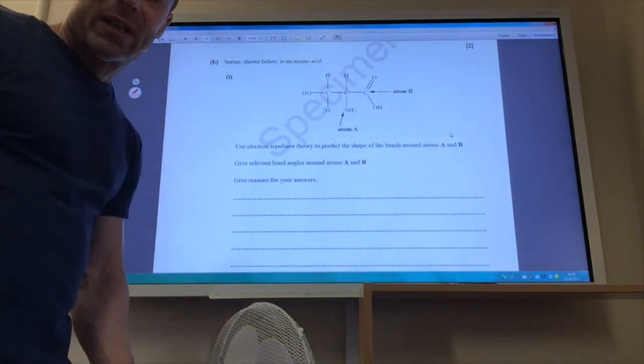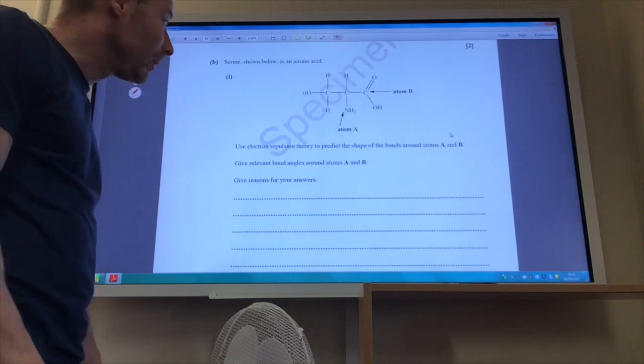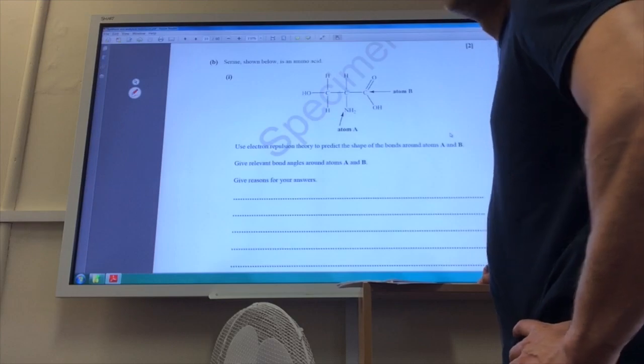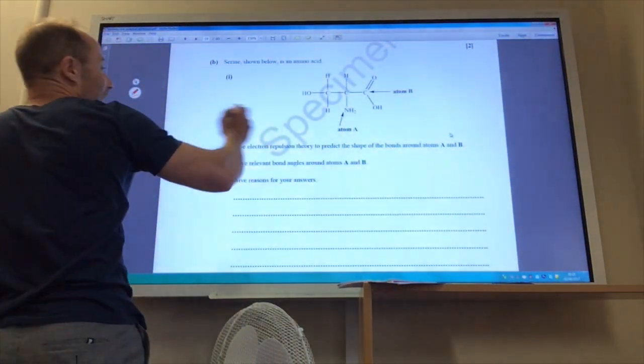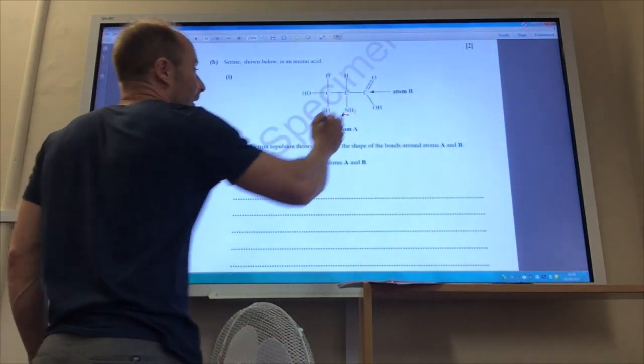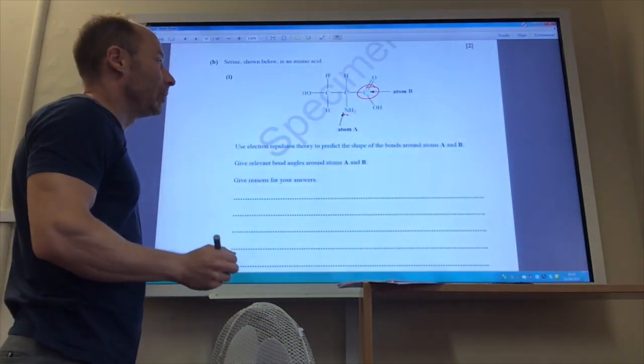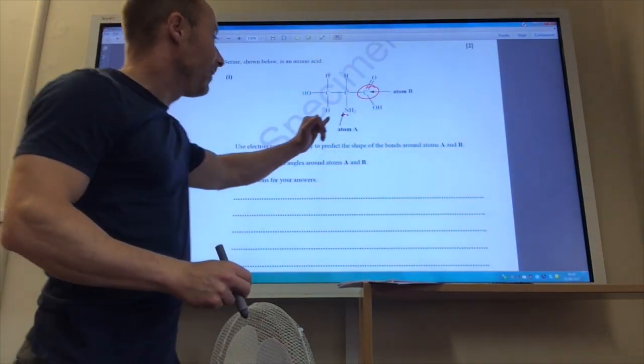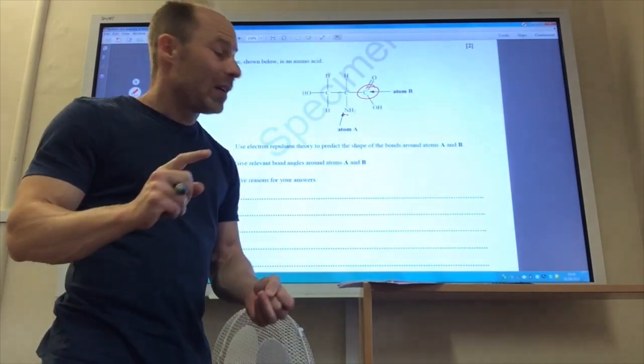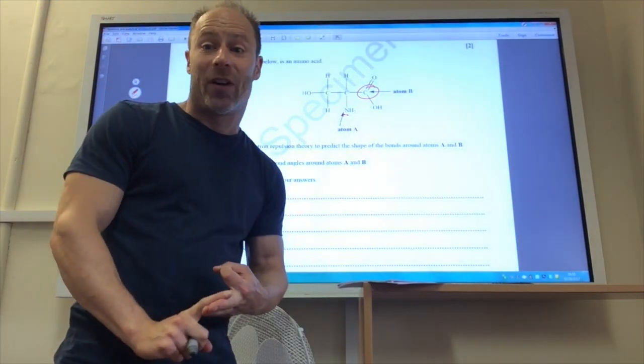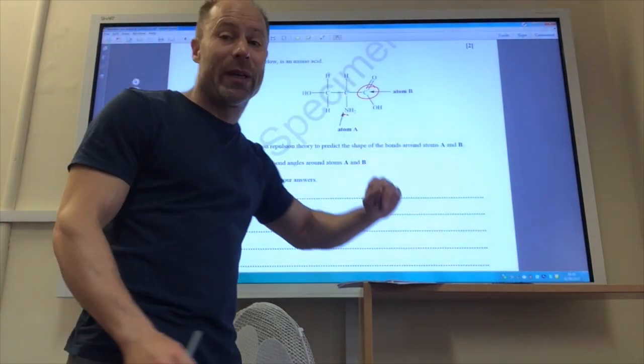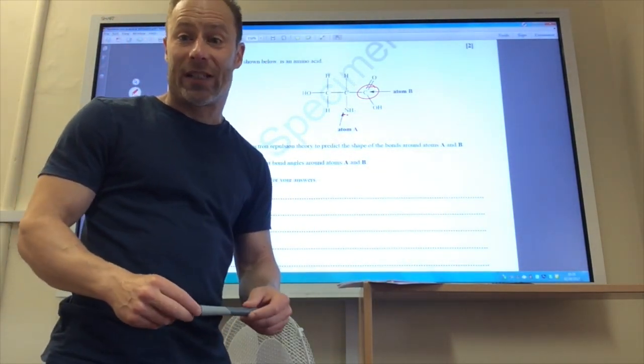This is going back to one of the first things you would have done on the course. We've got to predict the bond angles around atom A and B. Don't get carried away, just think this one through. On this nitrogen here, it's got three bonding pairs, but remember on that nitrogen it's got a lone pair there. This carbon here has only got three bonding pairs, no lone pair. Let's do atom A first. The way we go through is we say it's got three bonding pairs, one lone pair. Pairs of electrons repel to get as far away as they can from each other, and lone pairs repel more than bonding pairs, so the shape around here will be pyramidal and the bond angle will be 107 degrees.